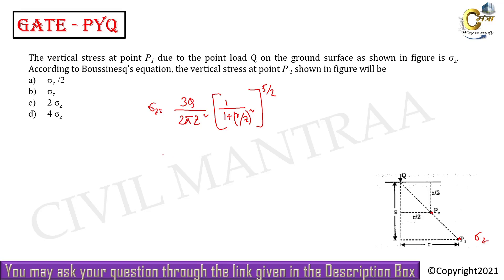So then we have to find out sigma at P2. If we find out sigma at P2, it will be 3Q over 2π, this is common. Here the value of z will be z by 2, so z by 2 squared, into 1 by 1 plus r by 2 divided by z by 2, whole squared, whole to the power 5 by 2.